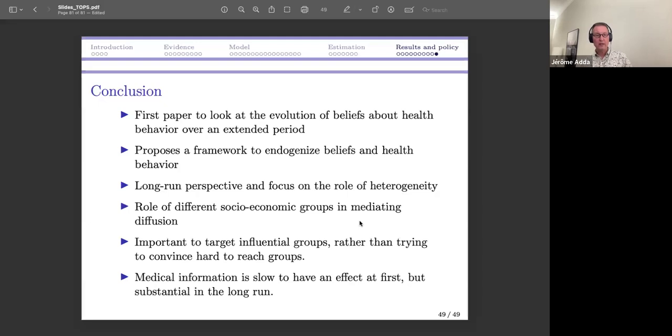I'm going to finish here. It's the first paper to look at the evolution of beliefs over an extended period which endogenizes beliefs and health behavior. We have a long-run perspective with focus on the role of heterogeneity across groups. This is a bit of a macro paper meeting sociology with different socioeconomic groups and how that evolves over the long run. Medical information is slow to reach everyone in society at first, but it's substantial in the long run. That's the message of the paper.